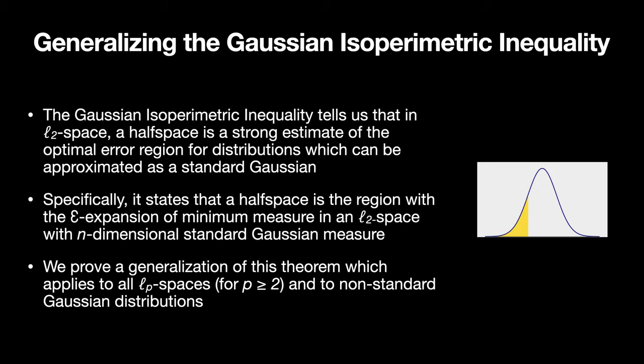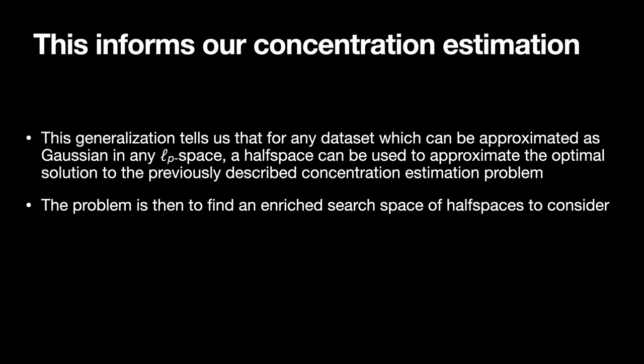In considering new algorithms for finding strong error region candidates, we thought about the Gaussian isoparametric inequality. It tells us that in L2 space, a half space is a very strong estimate of the optimal error region for distributions that can be approximated as a standard Gaussian. More specifically, it states that a half space is the region whose epsilon expansion has minimal measure in an L2 space with n-dimensional standard Gaussian measure. In our paper, we prove a generalization of the theorem which extends it to all Lp spaces for p greater than or equal to 2 and to non-standard Gaussian distributions. This generalization tells us that any dataset we can approximate as Gaussian in any Lp space has an optimal solution to the concentration estimation problem that can be accurately approximated by a half space.